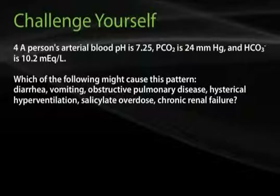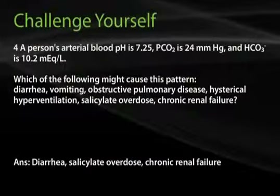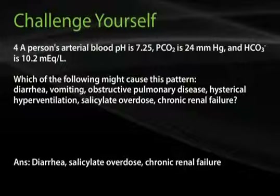Question 4: A person's arterial blood pH is 7.25, pCO2 is 24 mmHg, and bicarbonate concentration is 10.2 mEq per liter. Which of the following might cause this pattern: diarrhea, vomiting, structural pulmonary disease, hysterical hyperventilation, salicylate overdose, or chronic renal failure? The answer is diarrhea, salicylate overdose, and chronic renal failure. The low pH and low bicarbonate indicate a primary metabolic acidosis, and these three are the only choices that cause metabolic acidosis.